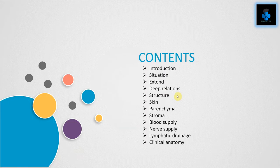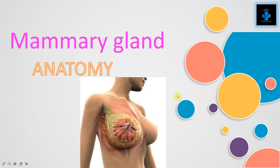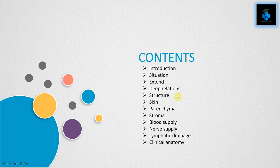Welcome to Medifaction. Today we will learn about the anatomy of the mammary gland. The mammary gland is an exocrine gland in humans and other mammals that produces milk to feed young offspring. In this video we will cover an introduction to the mammary gland, its situation and extent, its deep relations, and its structure, which divides into skin, parenchyma, and stroma. We will also learn about the blood supply, nerve supply, lymphatic drainage, and some important clinical anatomy.